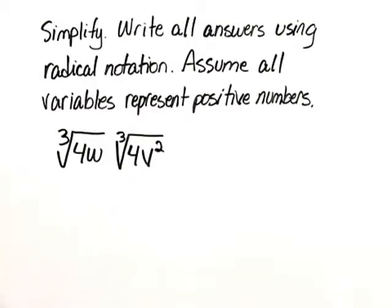Simplify. Write all answers using radical notation. Assume all variables represent positive numbers. The cube root of 4w times the cube root of 4v squared.